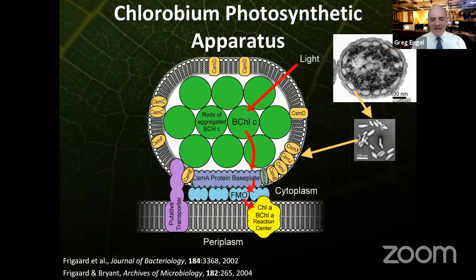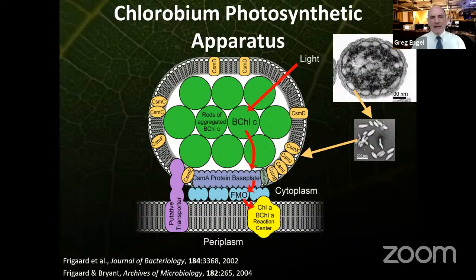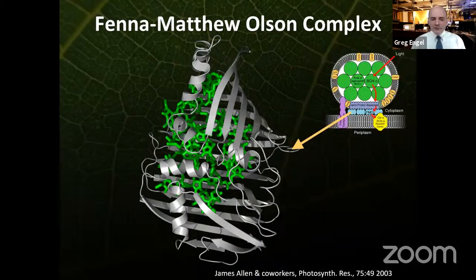The complex that links the chlorosomes to the reaction center is called the Fenna-Matthews-Olson complex, the FMO complex. It just sits as a little spacer between the chlorosome and the reaction center. It's nice and simple — sparingly water soluble because it's not an integral membrane protein, so it's easy enough that a physical chemist can handle it. It only has about eight chlorophylls per subunit, and for spectroscopists, it's asymmetric, so it doesn't have dark states, which is very handy when your only tool to probe something is a laser.